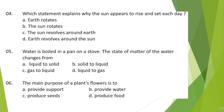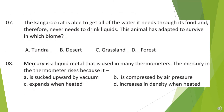Question 6: The main purpose of a plant's flowers is to? Question 7: The kangaroo rat is able to get all of the water it needs through its food and therefore never needs to drink liquids. This animal has adapted to survive in which biome? Look at the options and choose your answer.